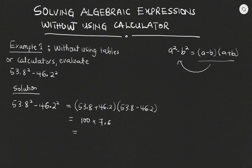Now if I multiply 7.6 by 100, because I have two zeros here, I will need to move the decimal point twice. So it will become 760 as my answer. So my answer here is 760. And therefore the solution to this problem without using a calculator is 760.